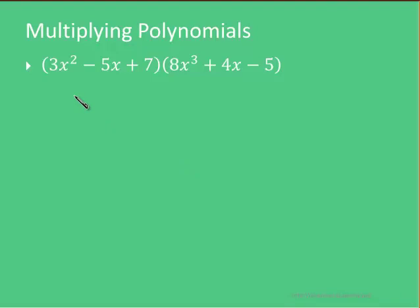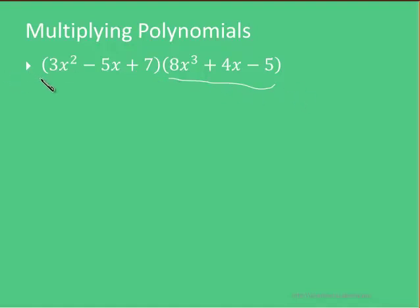In this approach, what we do is apply the distributive law repeatedly. So we start with 3x squared in this case and multiply 3x squared by this entire expression. Then we multiply minus 5x by this entire expression. Then we multiply plus 7 by this entire expression. So again, it's 3x squared times this entire polynomial, then minus 5x times this entire polynomial, then 7 times this entire polynomial.